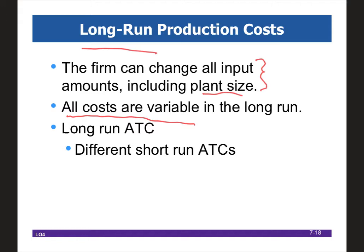The long-run ATC is different than the short-run ATC, despite the fact that they look exactly the same. What we're going to describe is the key difference: what is creating the shape of the long-run ATC. The short-run average total cost curve is related to the law of diminishing marginal returns, and because we don't have fixed costs in the long run, we have the exact same look of the ATCs.